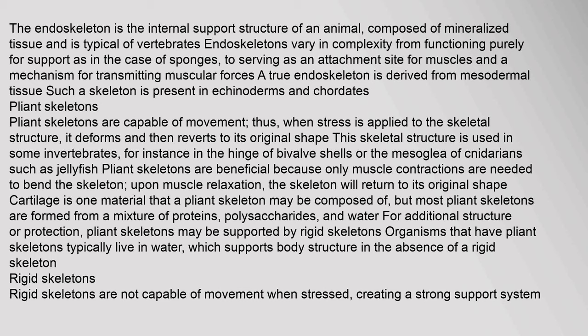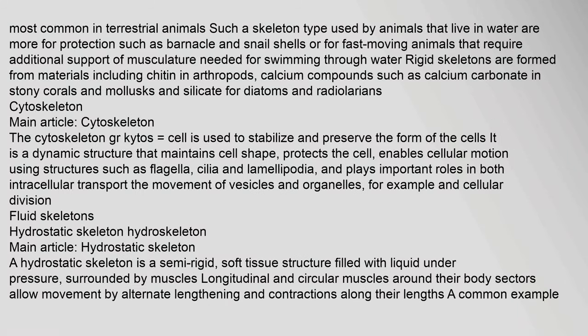Rigid skeletons are not capable of movement when stressed, creating a strong support system. Most common in terrestrial animals, such a skeleton type used by animals that live in water is more for protection, such as barnacle and snail shells, or for fast-moving animals that require additional support of musculature needed for swimming through water. Rigid skeletons are formed from materials including chitin in arthropods, calcium compounds such as calcium carbonate in stony corals and mollusks, and silicate for diatoms and radiolarians.